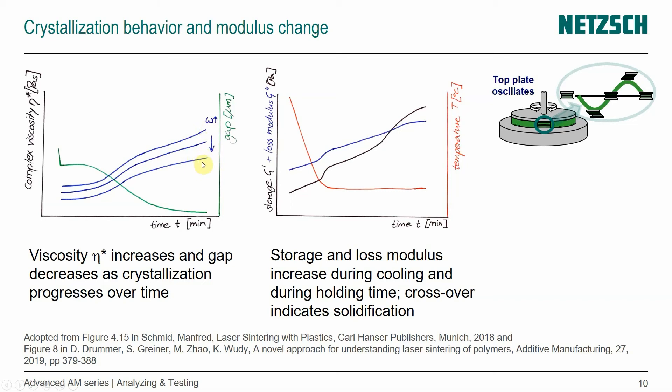With increasing frequency, the complex viscosity is lower, so faster deformation. Not super relevant for us. Just in general, as we're performing the measurement over time, the viscosity increases and the gap decreases. That's the green line. And that's because crystallization happens over time.